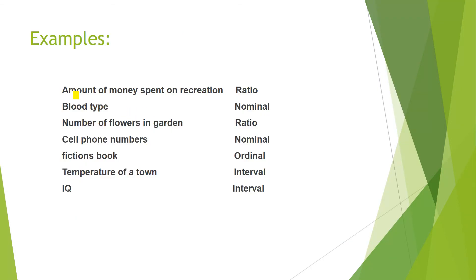At the end, there are few more examples. Suppose amount of money spent on recreation. It comes in the ratio measurement. Blood type is nominal. Number of flowers in the garden. Ratio. Cell phone calls. Nominal. Fictitious book. Ordinal. Temperature of the town. Interval. IQ. Interval. I hope now you understand the types of variables. And if you have any questions, you can write down on the comment section. Please do not forget to subscribe my channel on YouTube, Symaicademy. And thanks for watching it.